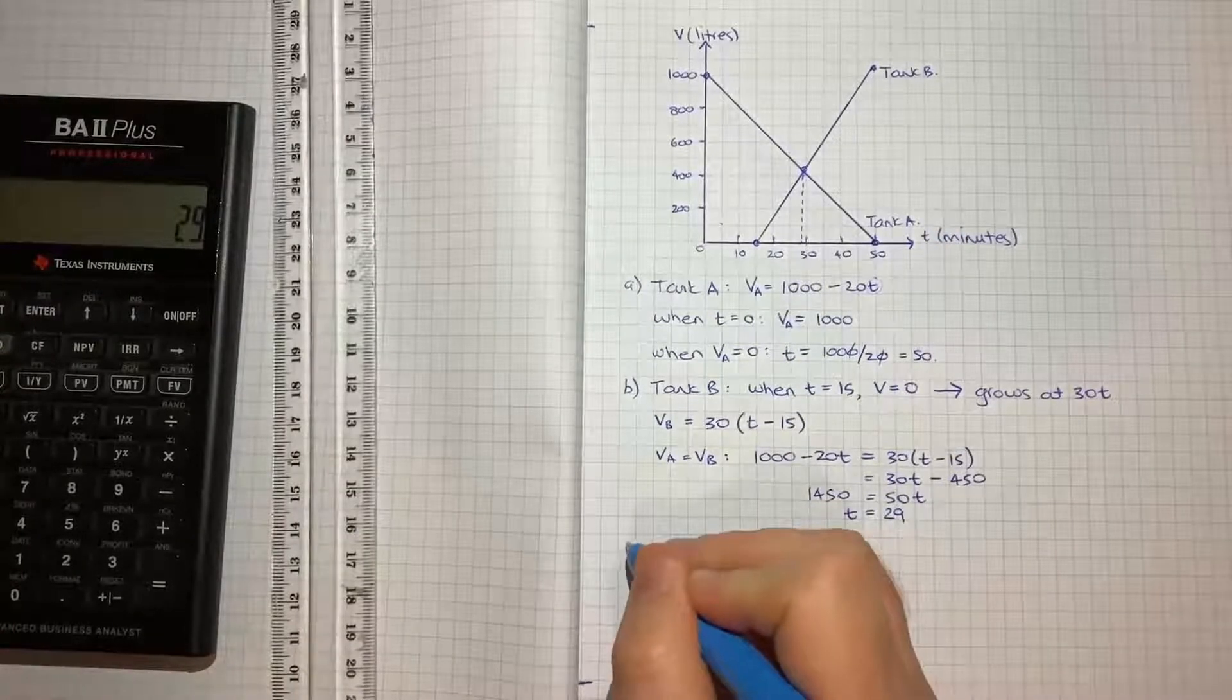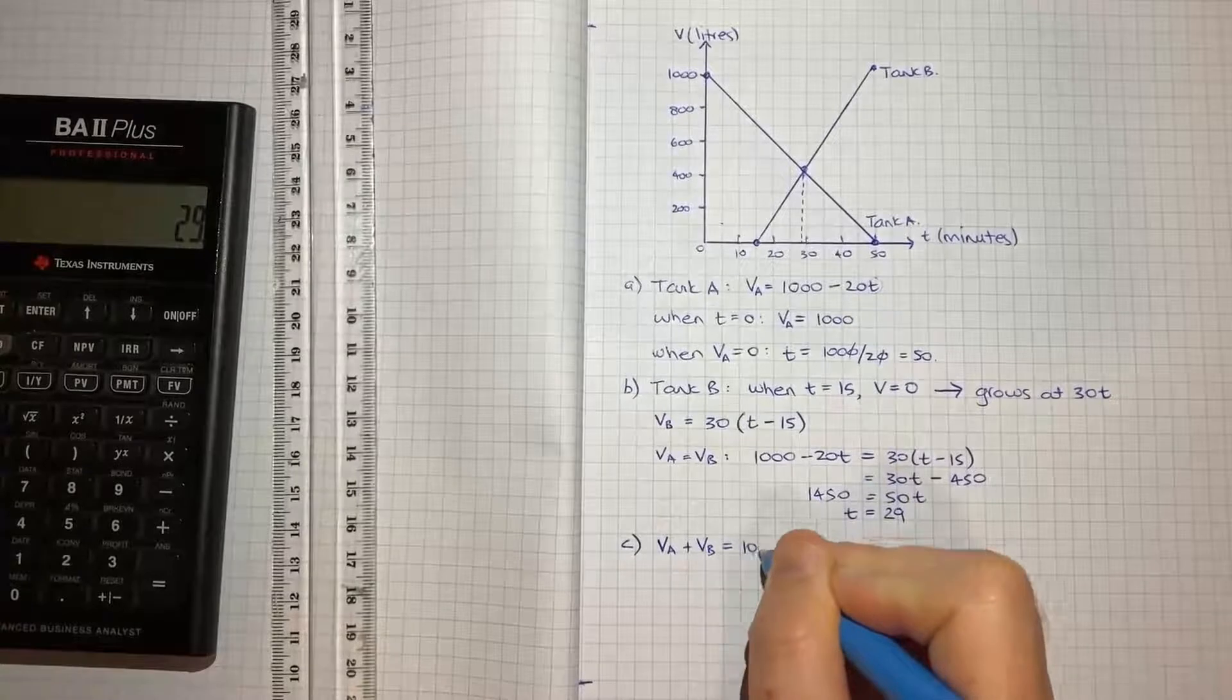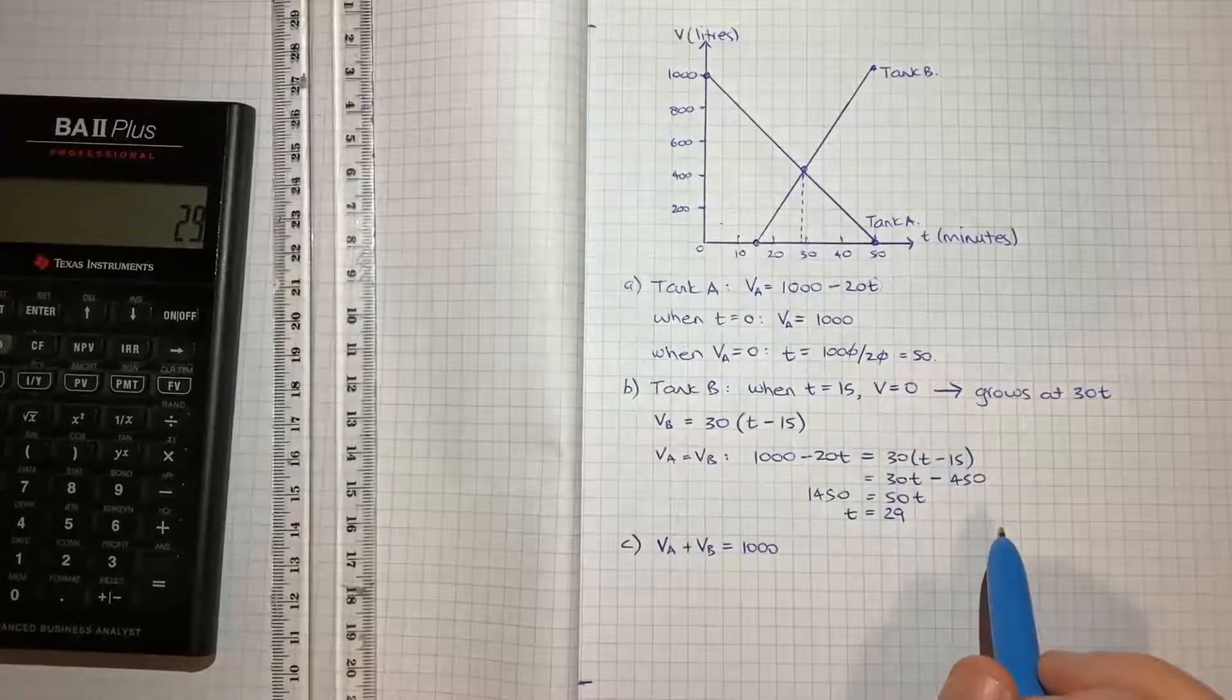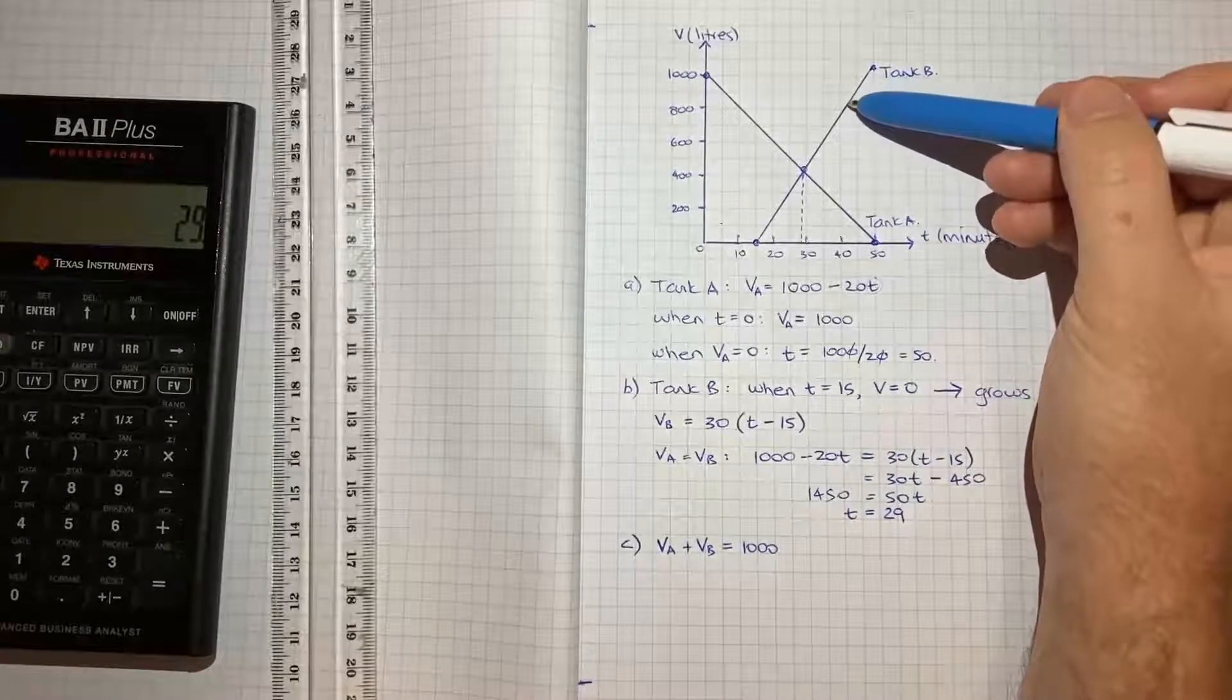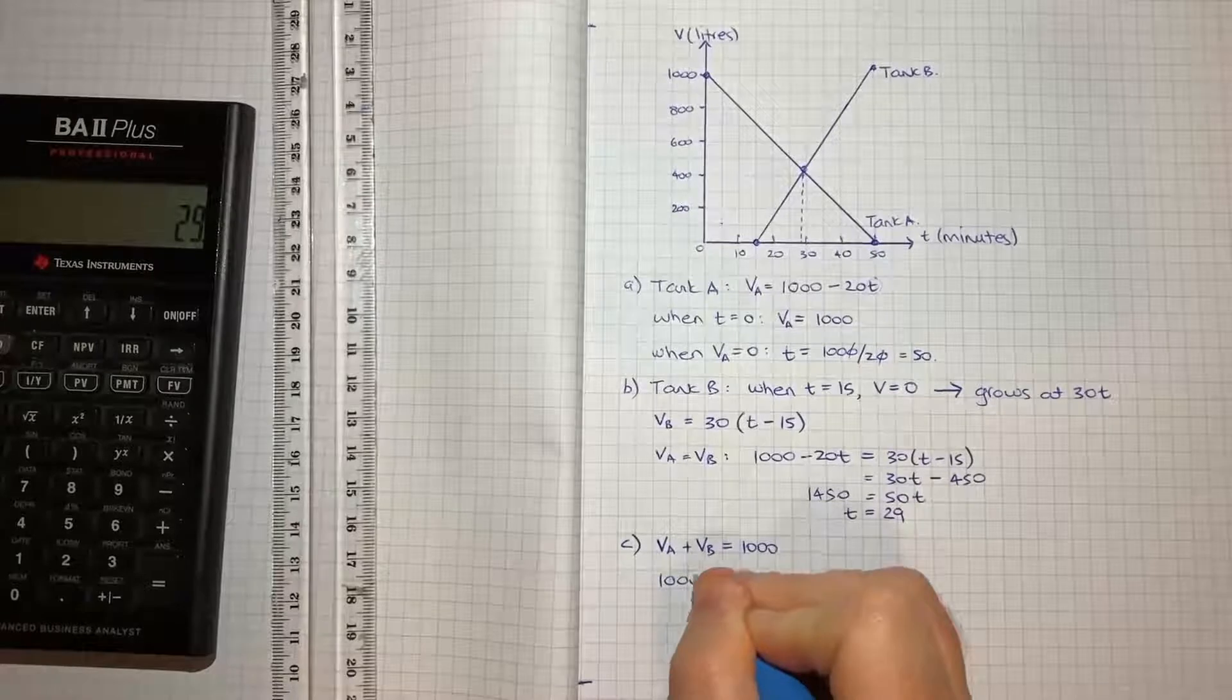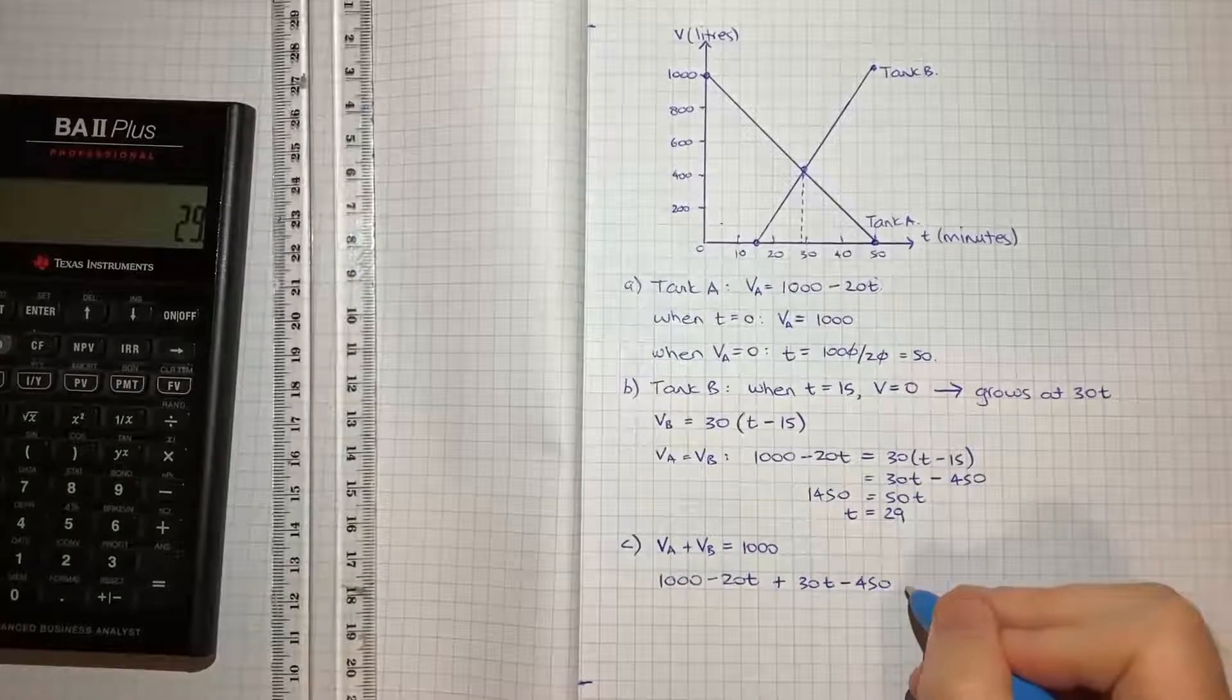For part C, the final part, we're asked to work out when the total volume in A plus the total volume in B equals 1000. They specifically say T > 0 because at exactly zero, we'd have 1000 + 0. We can use algebra here. What we're saying is we want (1000 - 20T) + (30T - 450) = 1000. Simplifying, that's 550 + 10T = 1000.